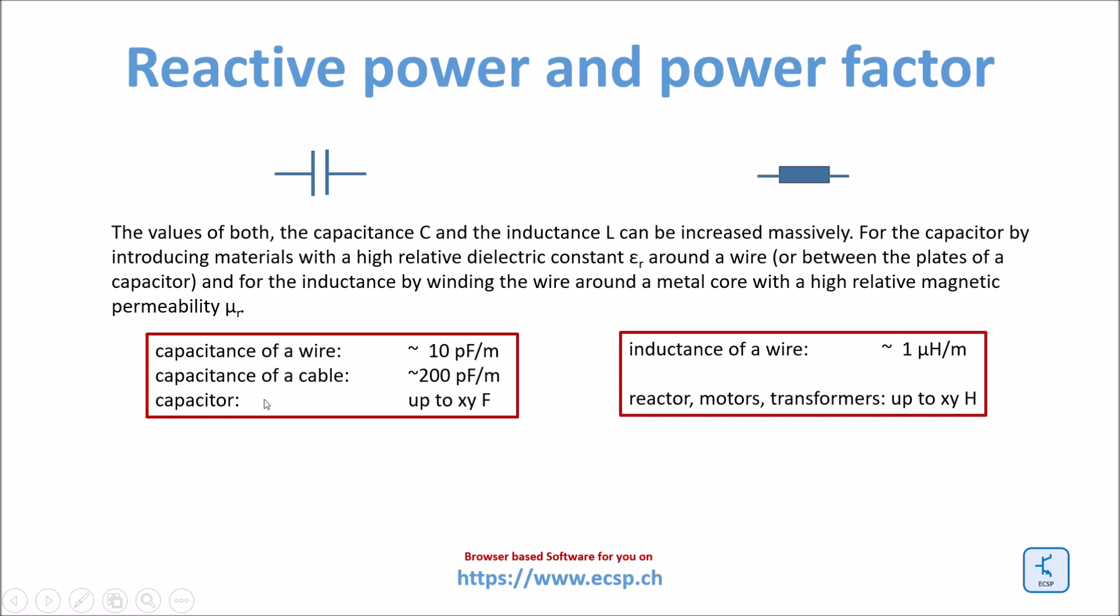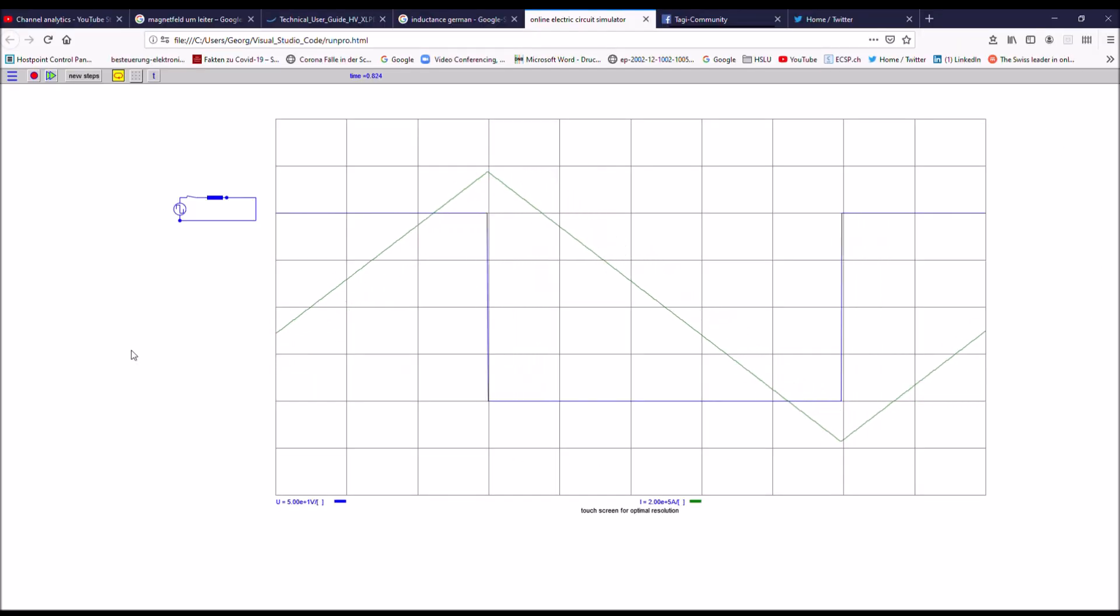There is also cable which have a much higher capacitance per meter. And there are full bulk capacitors as well as reactors, motors, transformers who have much higher capacitance values and inductance values. So far I have been using a rectangular source. I have now replaced my rectangular source by a sinusoidal voltage source.